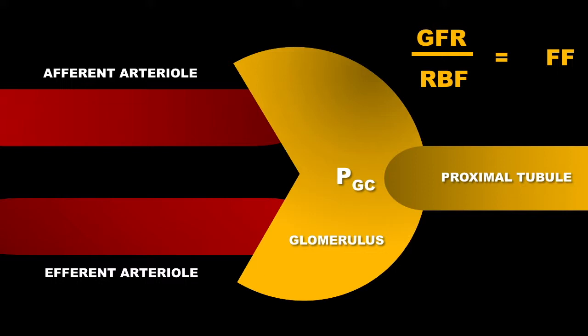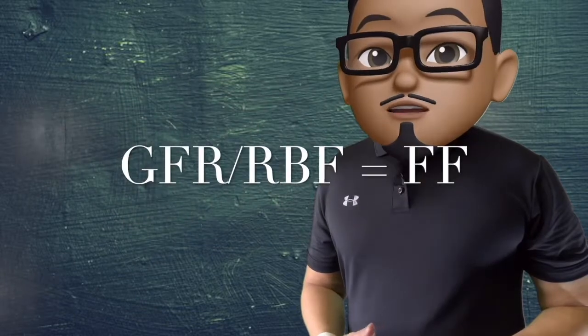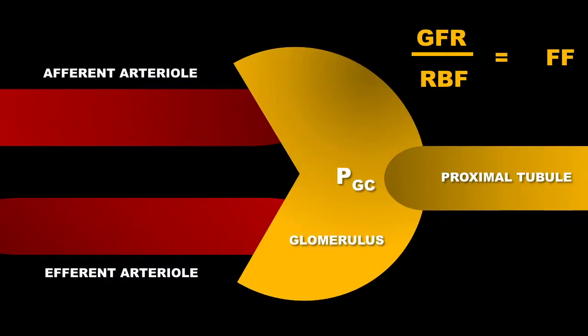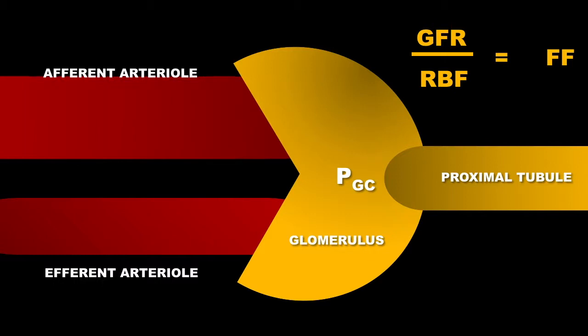This is a diagram of the relationship between your afferent arteriole and your efferent arteriole. Your glomerular filtration rate divided by your renal blood flow is your filtration fraction, which is normally 20%. Dilating your afferent arteriole will increase your hydrostatic pressure in your glomerular capillary, such that it will increase your GFR and your renal blood flow, but there will be no change in your filtration fraction.